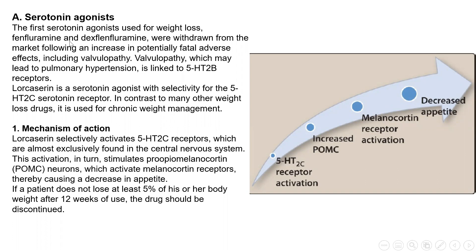Two drugs were developed in this class: fenfluramine and dexfenfluramine. These drugs were very effective in controlling obesity, but unfortunately they caused serious side effects — a condition called valvulopathy, or disorder of the blood vessel valves — leading to their discontinuation. This occurred because these drugs not only affected the CNS but also targeted serotonin receptor 2B in the valves of blood vessels. The valvulopathy led to pulmonary hypertension, an increase in blood pressure in the pulmonary arteries.